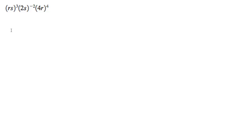It multiplies these values together. It's the same thing as r cubed s cubed times 2s raised to negative 2 — so 2 raised to negative 2, s raised to negative 2 — and then 4 raised to the 4th times r raised to the 4th.